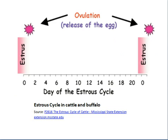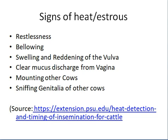This is a pictorial representation of the estrous cycle. A cow would come into heat at day zero, for example, and will again come into estrus after 21 days, when we will be able to breed the cow. So if we miss one heat, we will have to wait another 21 days to breed that cow.